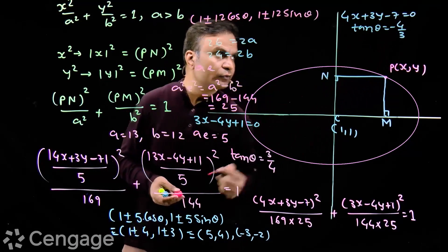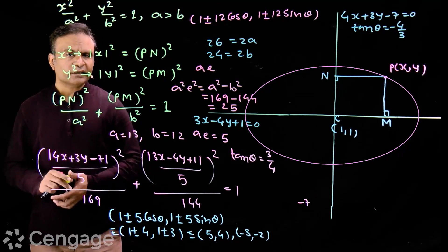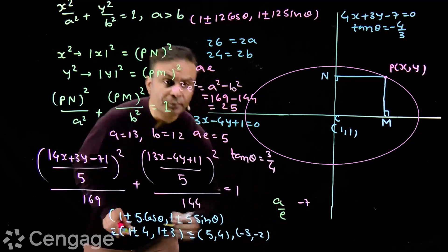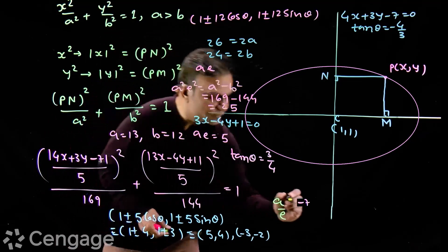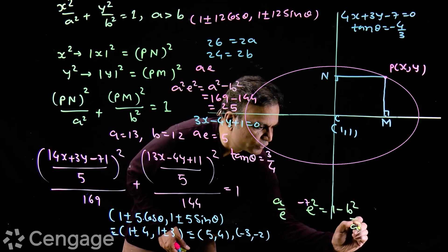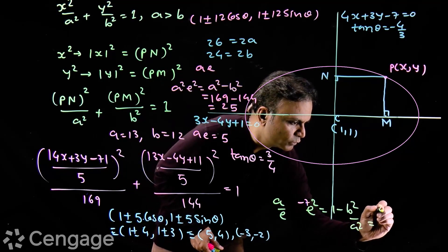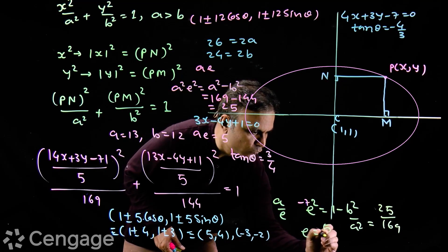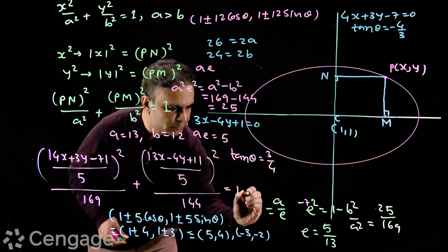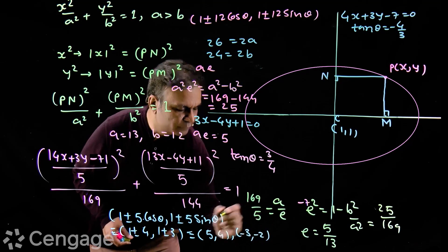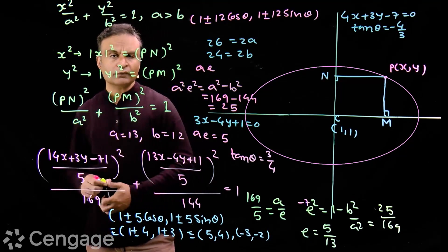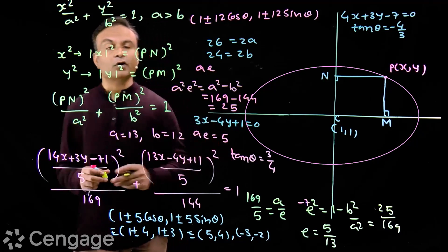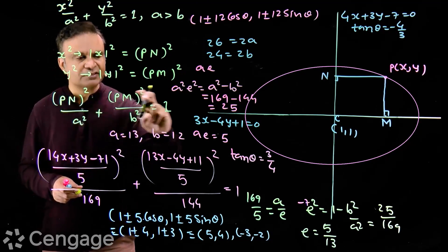We can also get the equations of the directrices using the fact that directrices lie at distance a/e from the minor axis. We get eccentricity using e² = 1 − b²/a², which gives 25/169, so e = 5/13. The value of a/e is therefore 169/5. Using this value we can get the equations of the directrices — try it yourself. This shows how to get the equation of an ellipse whose axes are not the coordinate axes using this structural equation.